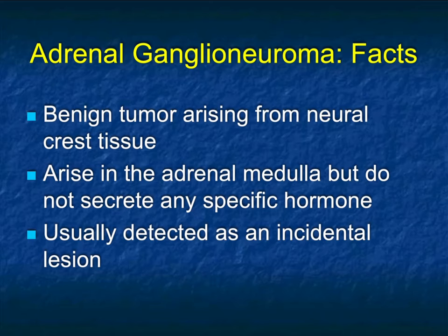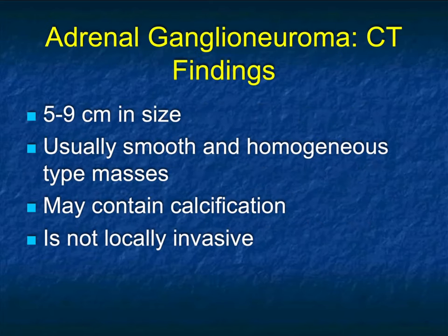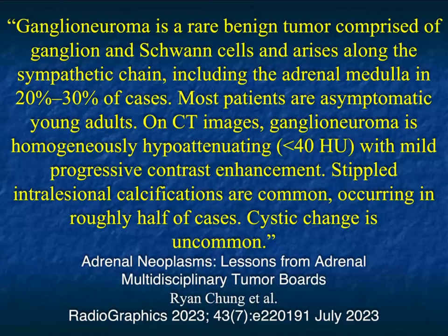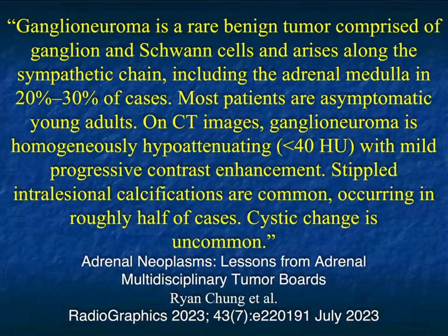Now for other tumors — adrenal ganglioneuromas arise in the neural crest tissue from the adrenal medulla but do not have any specific hormone excretion, and are usually incidental. They're often large and smooth, may contain calcification, but are not locally invasive — just a rare tumor. On CT, homogeneous hypoattenuation that enhances over time. If an adrenal lesion gets brighter between the venous phase and the 15-minute scan, think ganglioneuroma — though we've also seen that with lymphangiomas. Stippled intralesional calcifications occur in about half the cases.